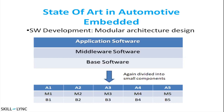Then comes middleware software. Middleware creates interfaces between the base software and the application software so that both can communicate with each other. It contains a list of application-purpose interfaces and only the declarations of functions — it does not have much logic. Its purpose is to pass information between these two layers.